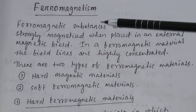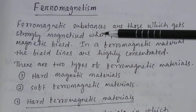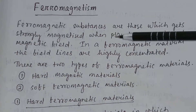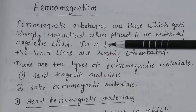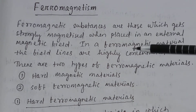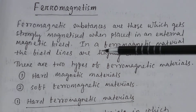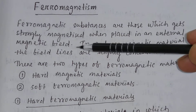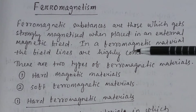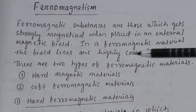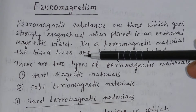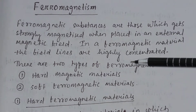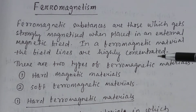Ferromagnetism. Ferromagnetic substances are those which get strongly magnetized when placed in an external magnetic field. In a ferromagnetic material, the field lines are highly concentrated.